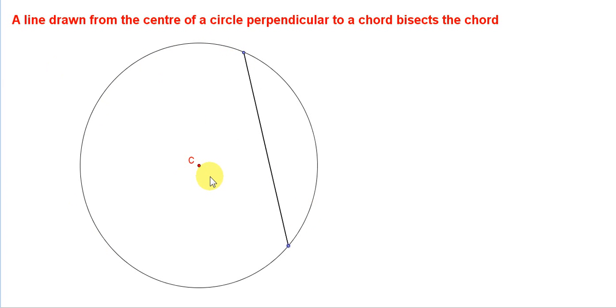C is the center of the circle, and we are going to draw a line from C perpendicular to this chord. I will call this line H.